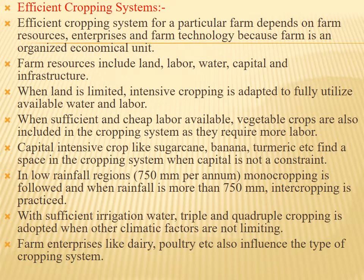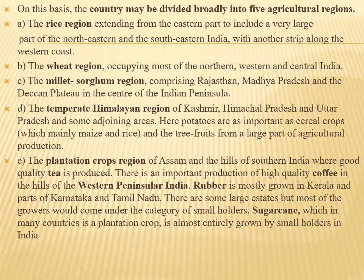Farm enterprises like dairy and poultry also influence the type of cropping system. On the basis of agriculture, the country may be divided broadly into five agricultural regions. The first is the rice region, extending from the eastern part to include a very large part of northeastern and southeastern India, with another strip along the western coast.